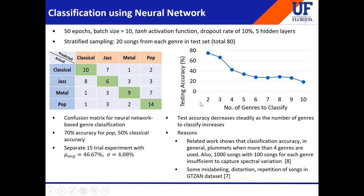We also varied the number of genres to classify — instead of 4, we also used 5, 6, 7, 8, 9, and the complete 10 genres from the GTZAN dataset. The testing accuracy goes down steadily as the number of genres increases, consistent with related work. This could be due to certain genres being inherently confusing (such as rock and blues), and also because some songs in the GTZAN dataset were reportedly mislabeled, had distortions, or were repeated — making it harder to classify a large number of genres.